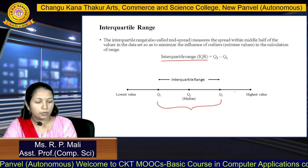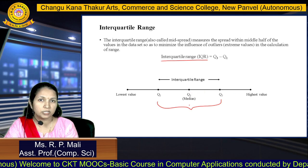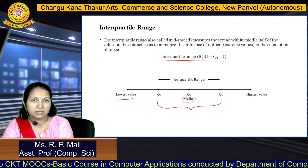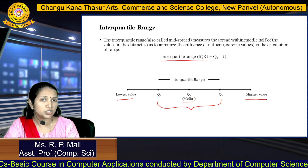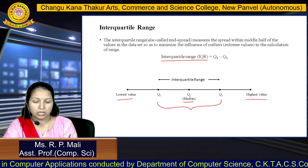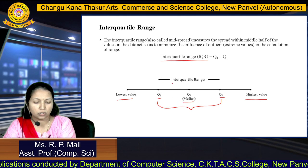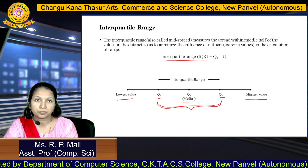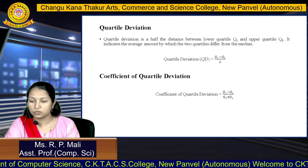If we plot one line in the middle, you will have Q2, which is your median. The starting value is the lowest value of the distribution, and the ending value is the highest value. In between, you have Q1, the first quartile, and Q3, the third quartile. The interquartile range denotes this middle area.